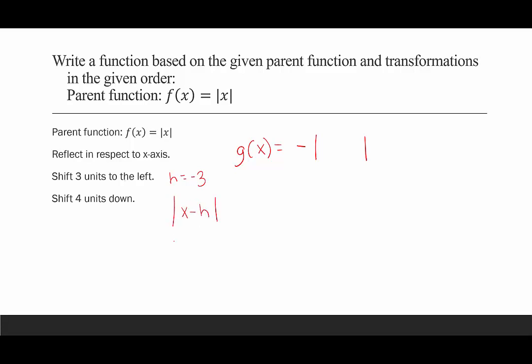So we plug in h, which is negative 3. That's x minus negative 3, and we would end up with x plus 3 inside the absolute value. And then, so this is done, and this is done.